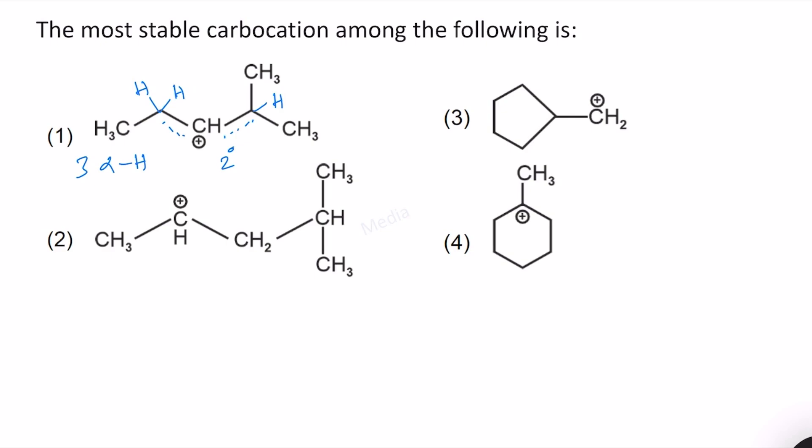In structure 2, this is also a secondary carbocation and we have here 5 alpha hydrogen atoms. 3 plus 2, one should not count this one.